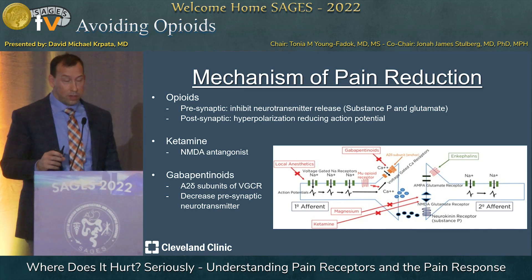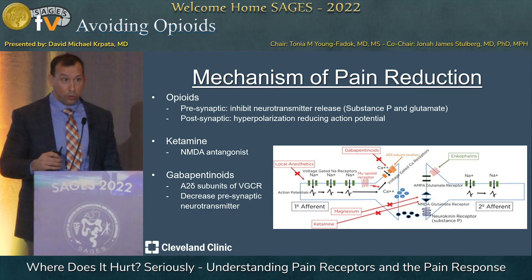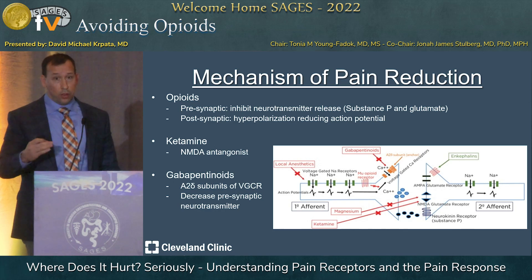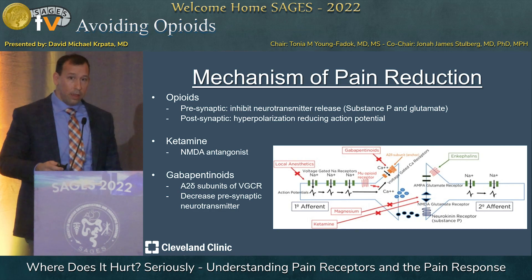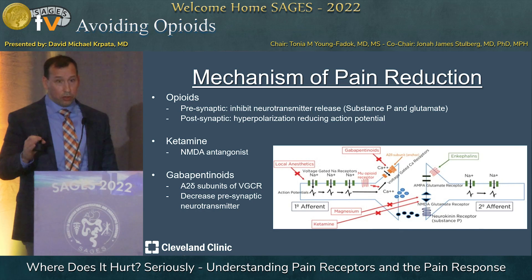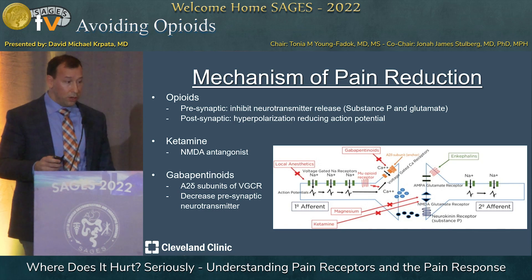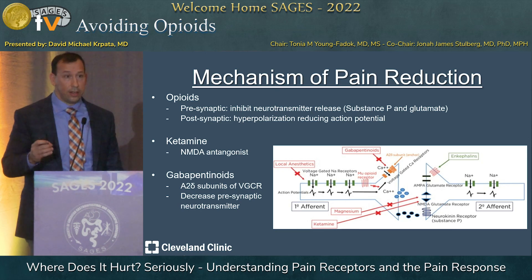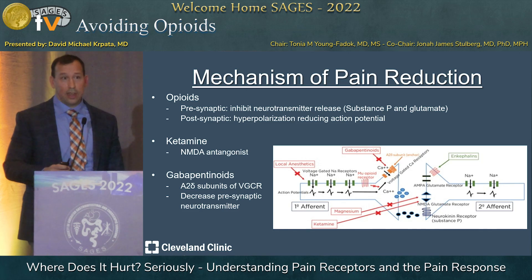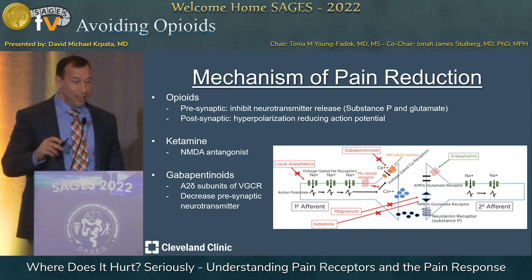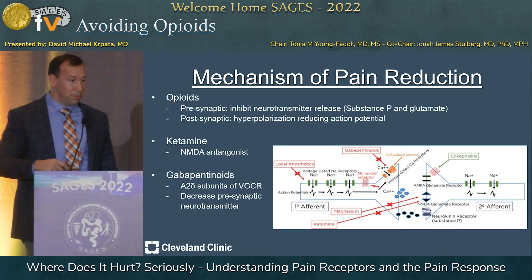Opioids impact presynaptic and postsynaptic function either by reducing substance P or glutamate transmission or by causing hyperpolarization, decreasing the signal through the second-order neuron up to the brain. Ketamine is an NMDA antagonist with central effects, but from a modulation standpoint it also functions on the postsynaptic secondary neuron in the substantia gelatinosa. Gabapentinoids — gabapentin, Neurontin, Lyrica — act on alpha-2-delta subunits of voltage-gated calcium channel receptors at the presynaptic first-order neuron, decreasing the amount of substance P transmission and thus decreasing pain perception.